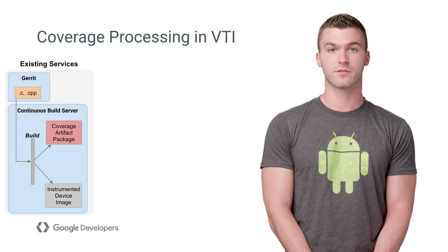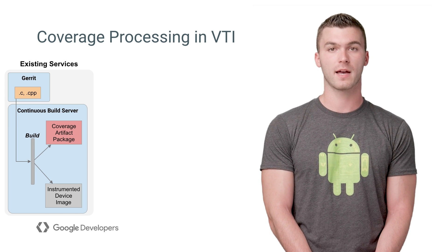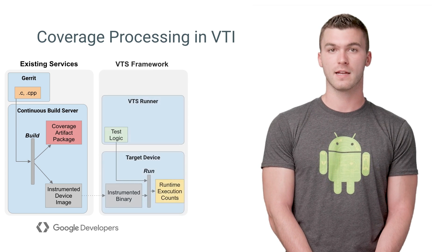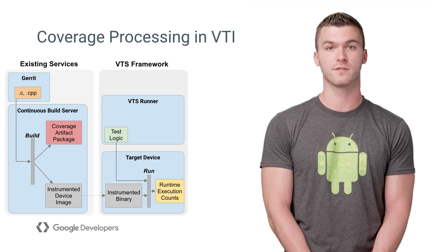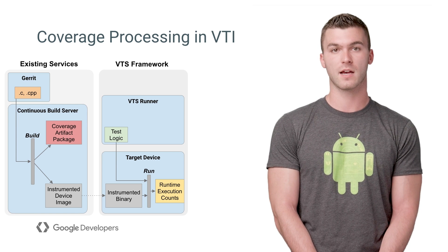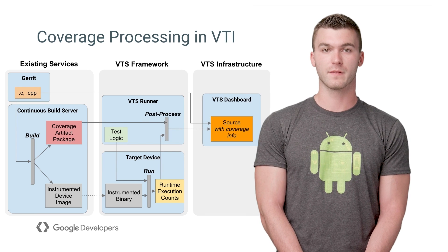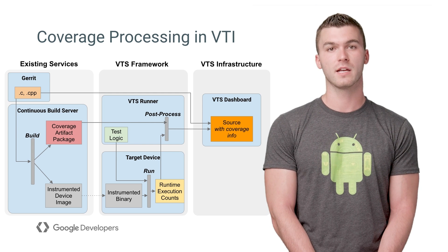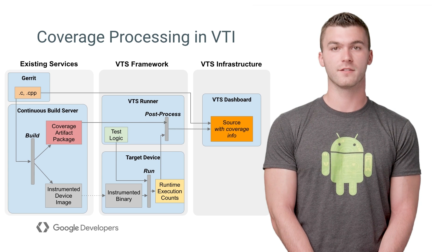Now, I will step through the coverage processing flow in VTS and VTI. First, the continuous build server compiles a specially instrumented device image in the coverage artifact package from the source code. Next, the VTS framework runs the test logic against a device flashed with the instrumented device image. This automatically produces runtime execution counts for each instrumented module. Finally, the VTS framework processes the runtime configuration data with the help of the coverage artifact package in order to produce per source file coverage summaries. The result is uploaded to the VTS dashboard where it will be overlaid on top of the original source code.